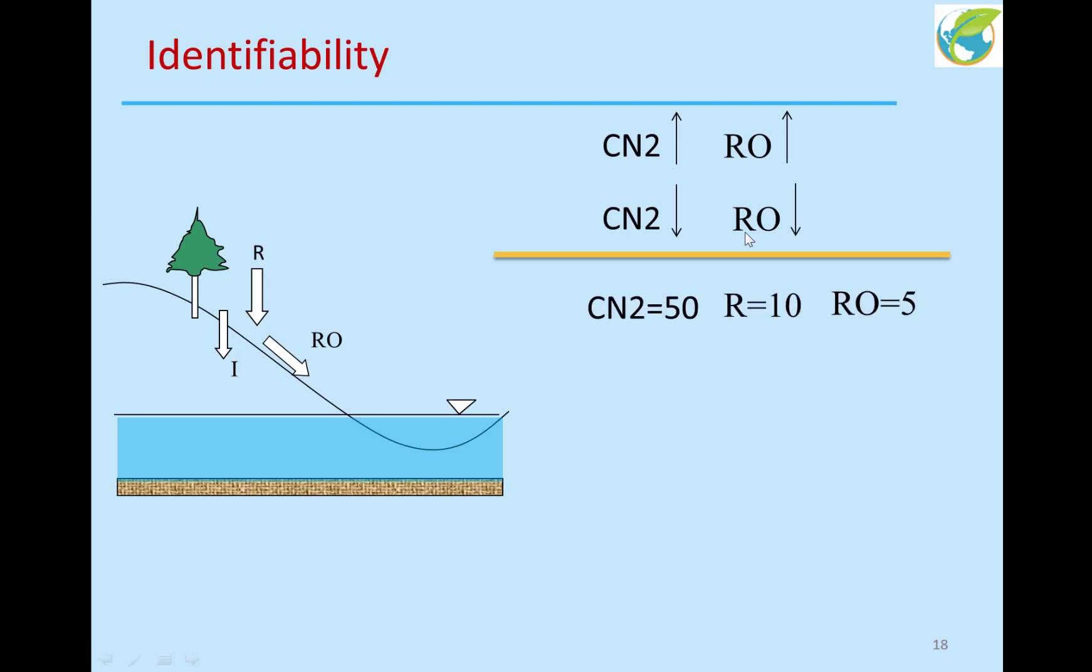So for example, let's say I have CN2 equal to 50, rainfall of about 10 units, and runoff of about 5 units. Now if I change my CN2 to 60, I would expect runoff should increase. But if I decrease rainfall at the same time, then my runoff stays the same. If I increase CN2 further and decrease rainfall even further, my runoff stays the same. I can increase CN2 to any number I want and keep adjusting the rainfall and I get the same runoff.